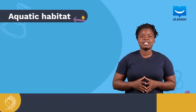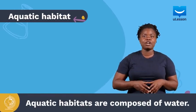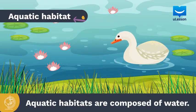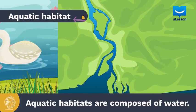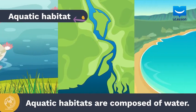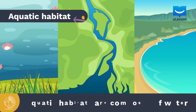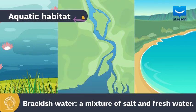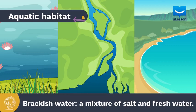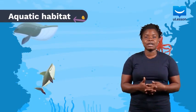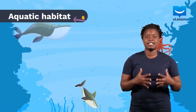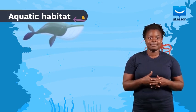Aquatic habitats are composed of water and could range from small bodies of freshwater like ponds, to brackish water in estuaries, and to large bodies of marine — that is saltwater — like oceans. Estuaries contain brackish water, which is a mixture of salt and freshwater. Aquatic plants and animals reside in water bodies and carry out their activities within the water.